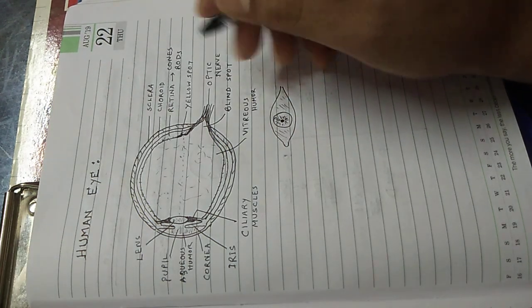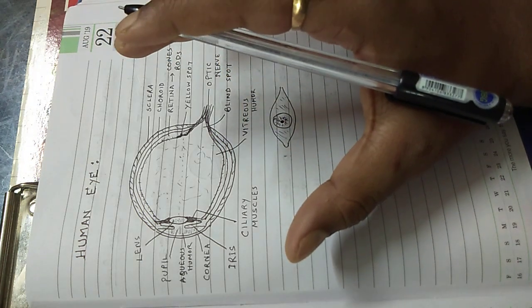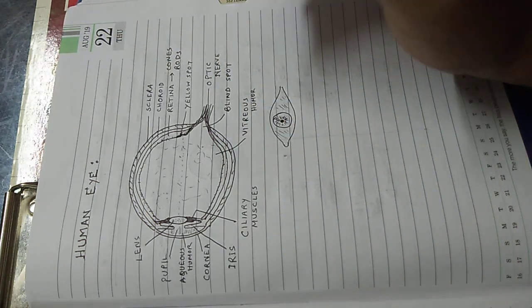So overall, these are the structures of a typical human eye. Thank you.